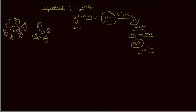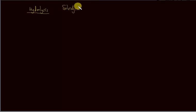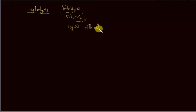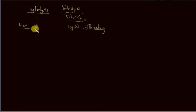Now I will come to the important concept — hydrolysis. It is a term used under a process called as solvolysis. Solvolysis is made up of two words: the first word is solvent, and the second one is lysis, which means breaking. When a particular substance is broken in the presence of a solvent, that process is called as solvolysis. And if the solvent is water, then that particular process is called as hydrolysis.